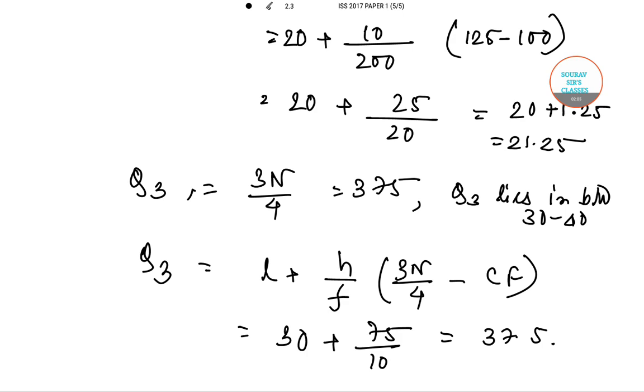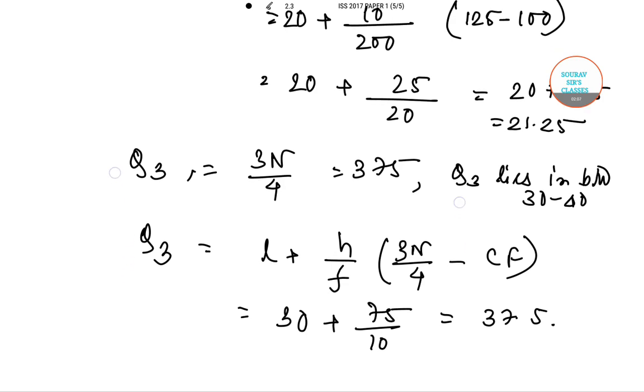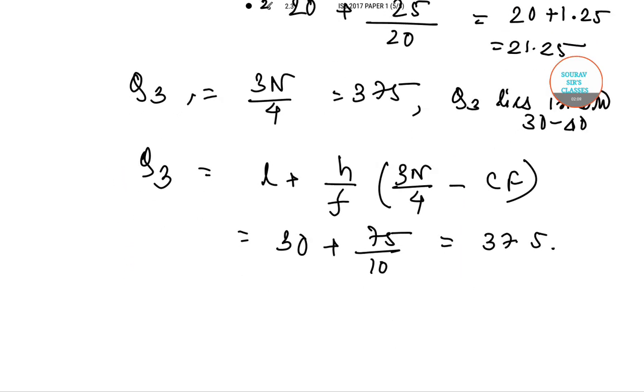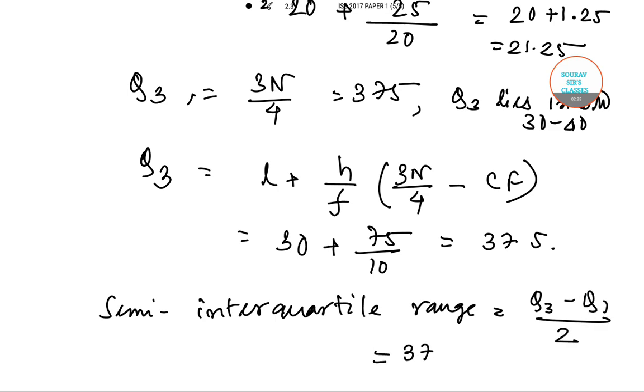So now we are asked to calculate the interquartile range. The semi-interquartile range equals (Q₃ minus Q₁)/2, that equals (37.5 minus 21.25)/2.